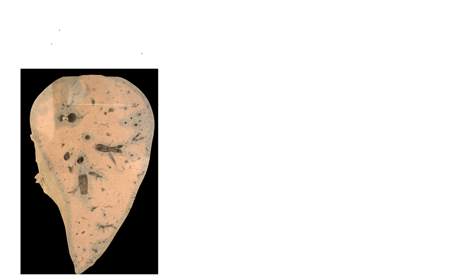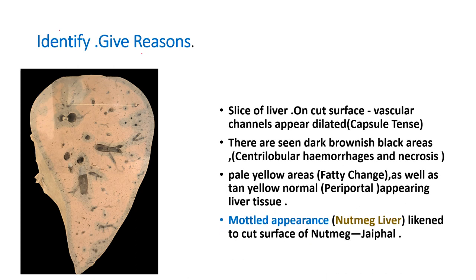This is a slice of the liver, and in contrast to the previous specimen, you see prominent vascular radicals or vascular channels on the cut surface. The capsule here is also tense and glistening. There are areas that are blackish-brown, predominantly around these dilated vascular channels, which are the centrilobular areas or around the central vein of the hepatic lobule. This blackish-brown color is due to hemorrhages and necrosis.